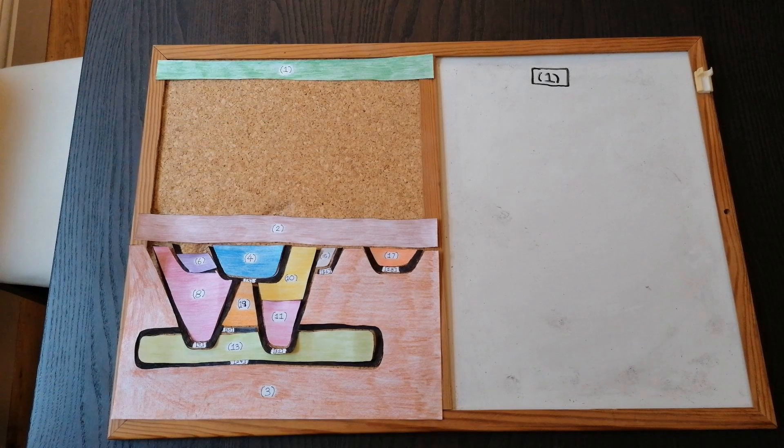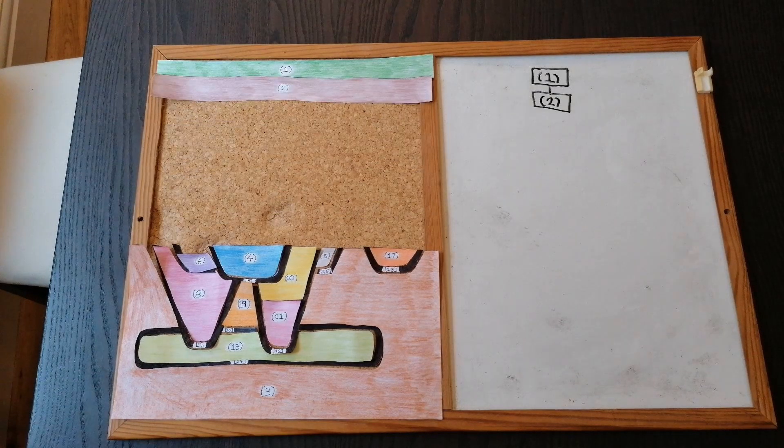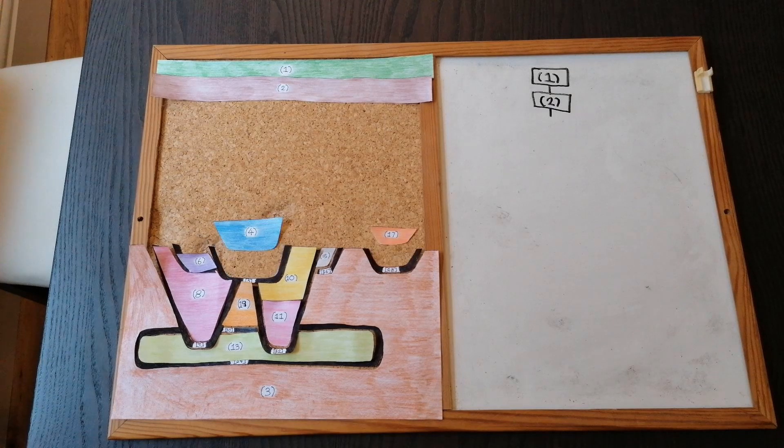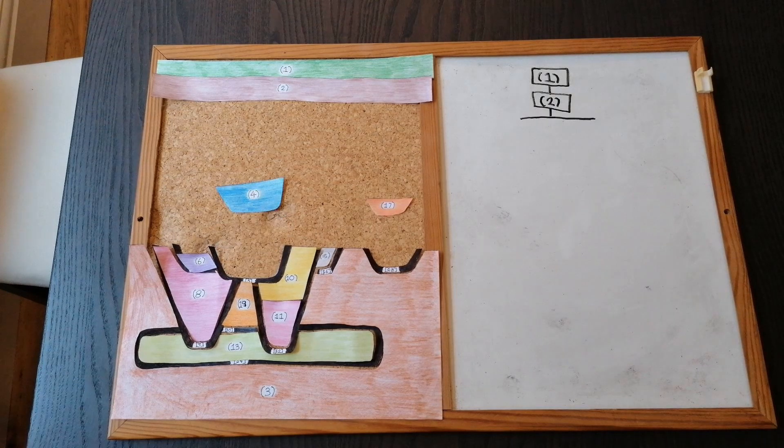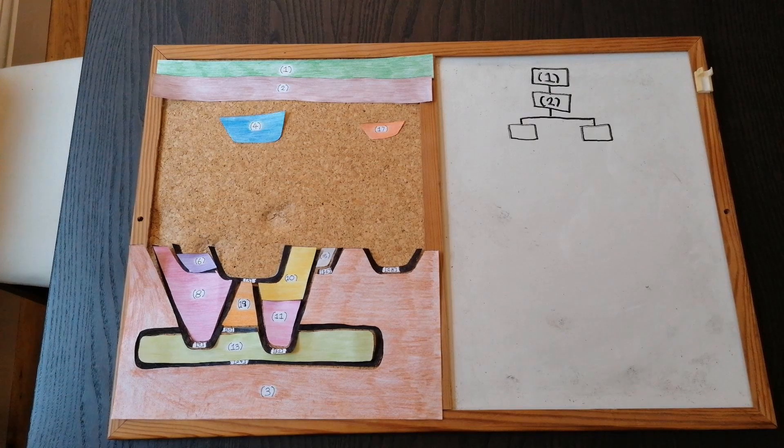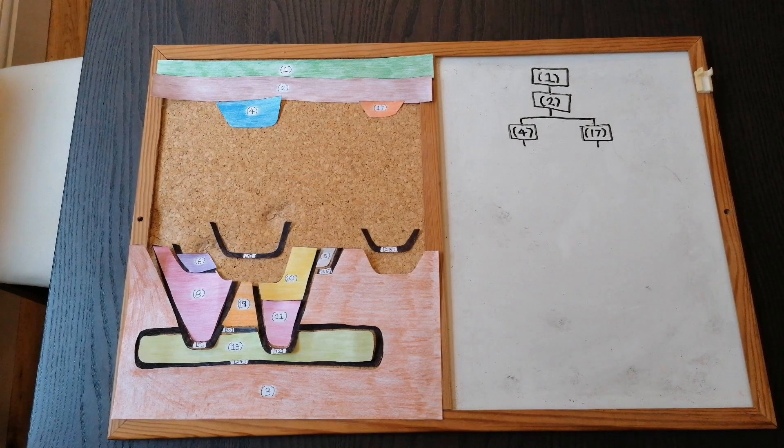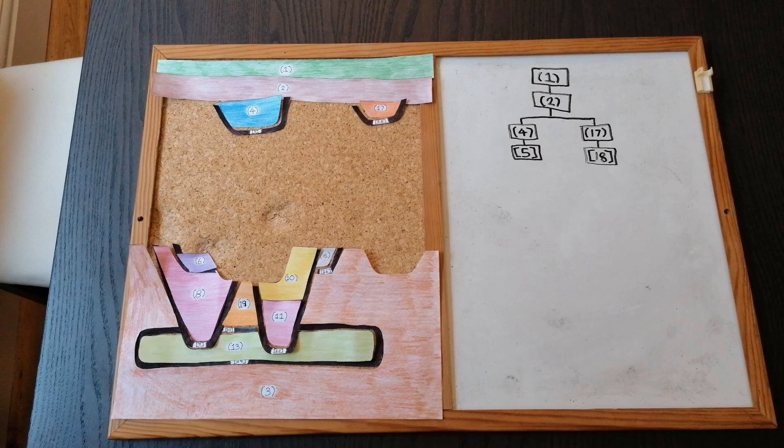1 and 2, our topsoil and subsoil, are nice and easy. But what next? Well, 4 and 17 slide straight up. Because they are separate, we can't ascertain which deposit was made first. So, our Harris matrix branches out to denote that they are on the same stratigraphic layer. These are then followed by cuts 5 and 18.